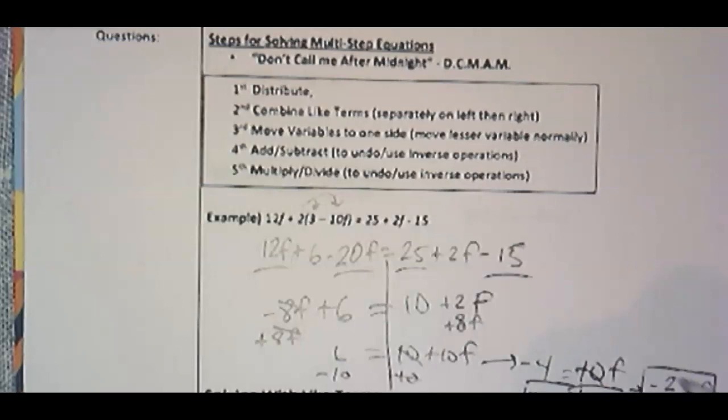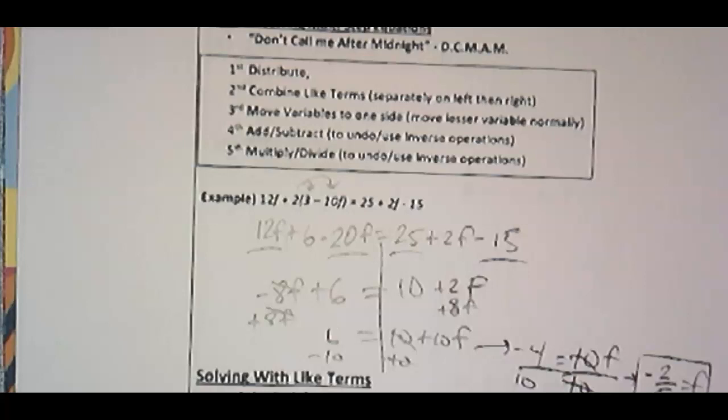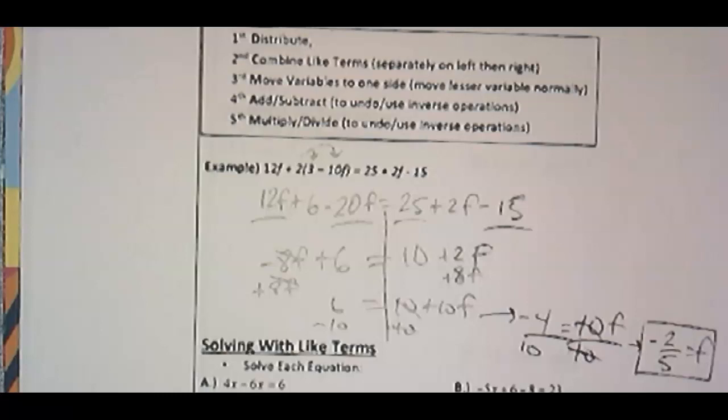All right. If you reduce that, negative 4 tenths, you should get negative 2 fifths. And anyhow, I'm going to go ahead and move along. Kind of didn't end up on screen there. Sorry about that. There it is. So hopefully you can see it.